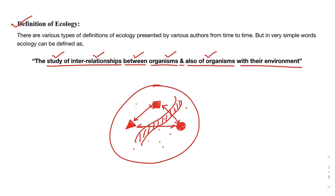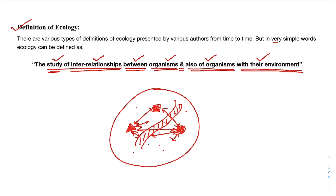And also of organisms with their environment — for example, what is the relationship of this organism with the soil, or what is the relationship of this organism with the water body. So the definition of ecology is: study of interrelationships between organisms and also of organisms with their environment. It is a very simple definition.